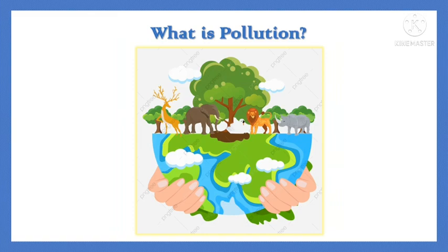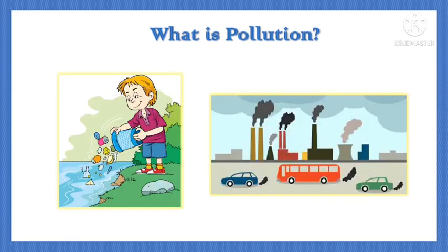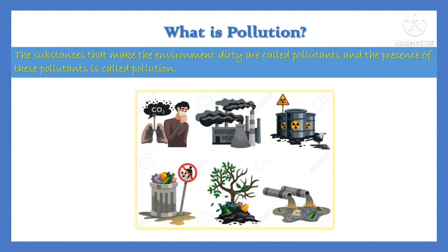Children, we all depend on our surroundings for food, water, clothing, etc. We use the resources and then discard the waste materials in the environment. The environment gets dirty due to the addition of unwanted and harmful substances into it. The substances that make the environment dirty are called pollutants, and the presence of these pollutants is called pollution.